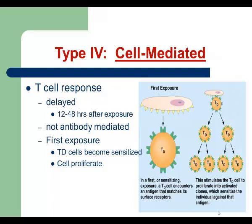Type 4 hypersensitivity reactions are called cell-mediated type, or delayed type. We call it delayed type because the time of reaction starts from 12 hours and can last up to a few weeks or sometimes months. We call it cell-mediated because no antibodies are involved in type 4 hypersensitivity reactions. Instead, T cells are involved. Type 4 pathogenesis is very similar to type 1 — it also has two steps, two phases. Patients have to be sensitized first.